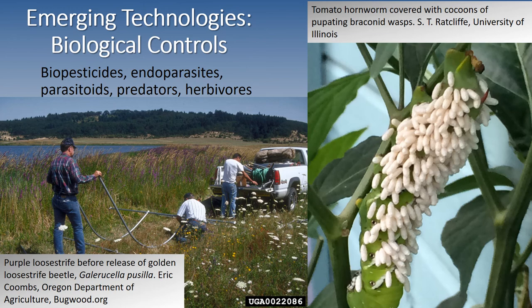Biological controls can also be a technology that can be deployed. We've seen an expansion of biopesticides lately, and we can also deploy endoparasites, parasitoids, predators, and herbivores. We've had a lot of success in wetlands using herbivores to eliminate purple loosestrife, which is an invasive non-native plant. These approaches may have uses in crop production systems as well. On the right we have a parasitized tomato hornworm covered with pupating braconid wasps, which will soon emerge and fly off to parasitize other hornworm caterpillars.